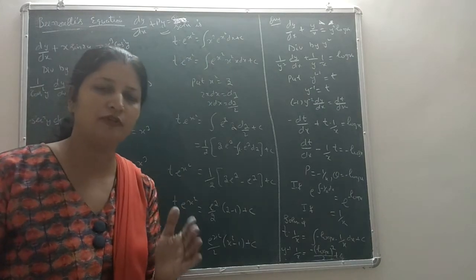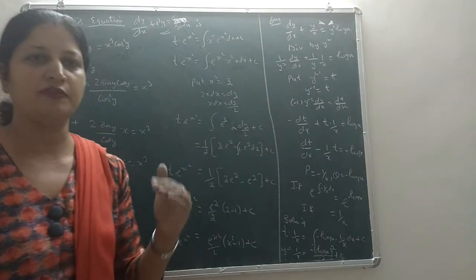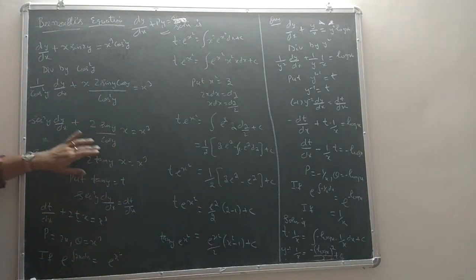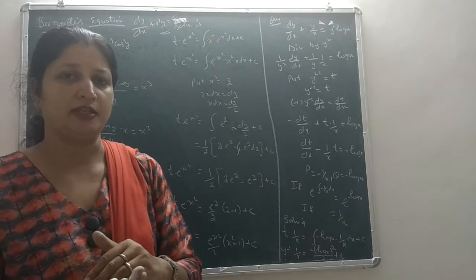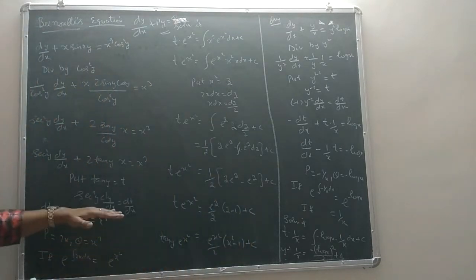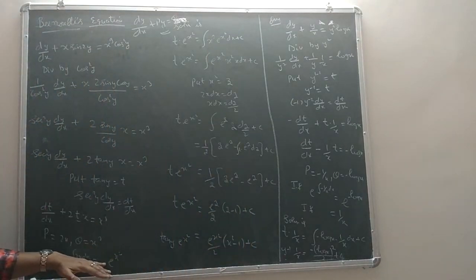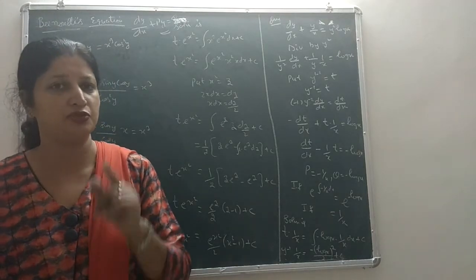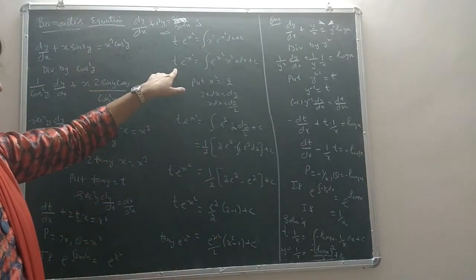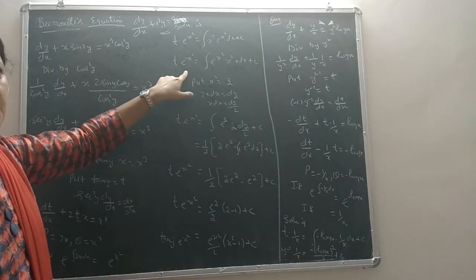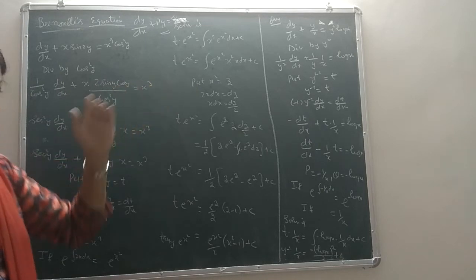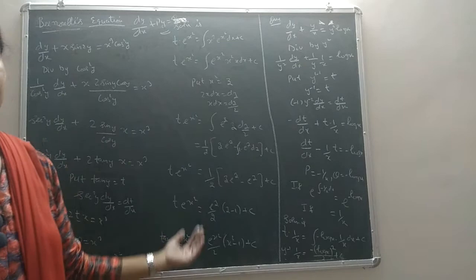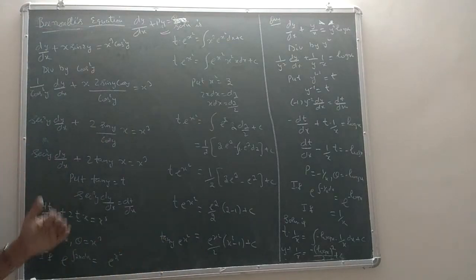To summarize the method: divide the equation by the function of y present, then substitute so that the second term — the coefficient of y — becomes the new variable, not tan(y) directly. Here we put tan(y) equal to t.